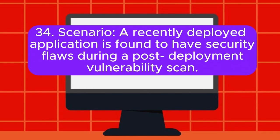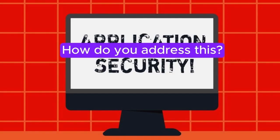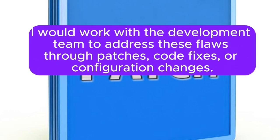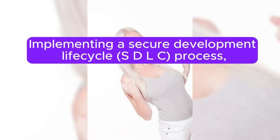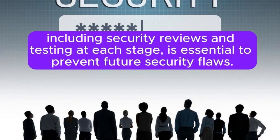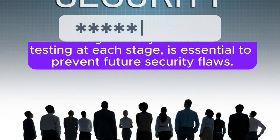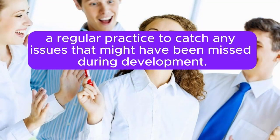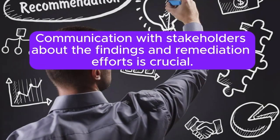Scenario 34: A recently deployed application is found to have security flaws during a post-deployment vulnerability scan. How do you address this? I would immediately prioritize and assess the identified security flaws based on their severity and potential impact. I would work with the development team to address these flaws through patches, code fixes, or configuration changes. Implementing a secure development lifecycle (SDLC) process, including security reviews and testing at each stage, is essential to prevent future security flaws. Additionally, I would ensure that post-deployment vulnerability scans are a regular practice to catch any issues that might have been missed during development. Communication with stakeholders about the findings and remediation efforts is crucial.